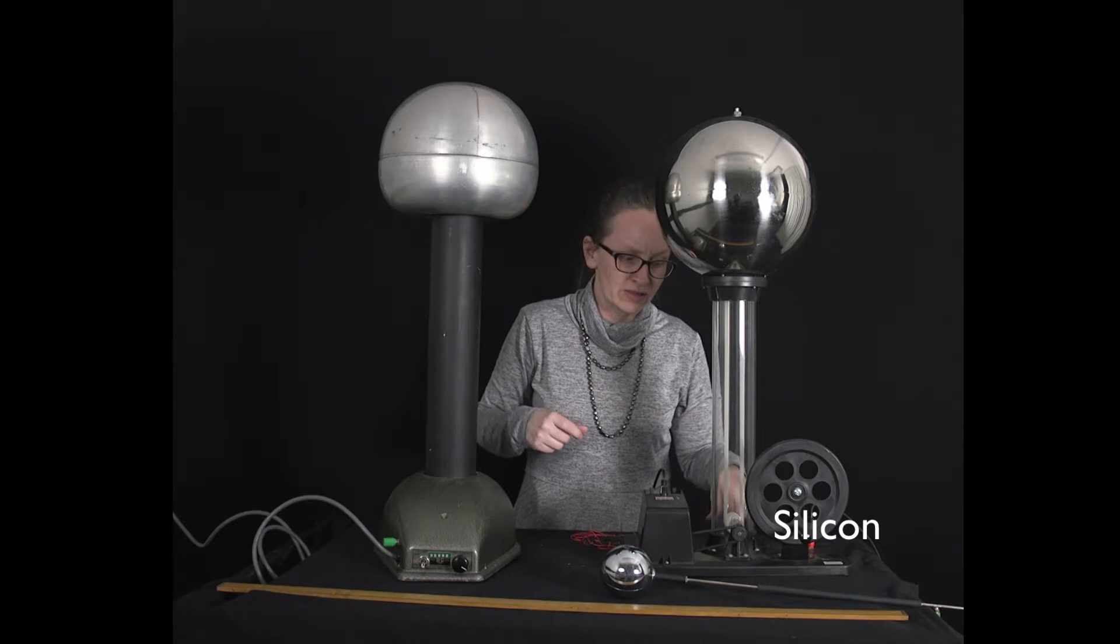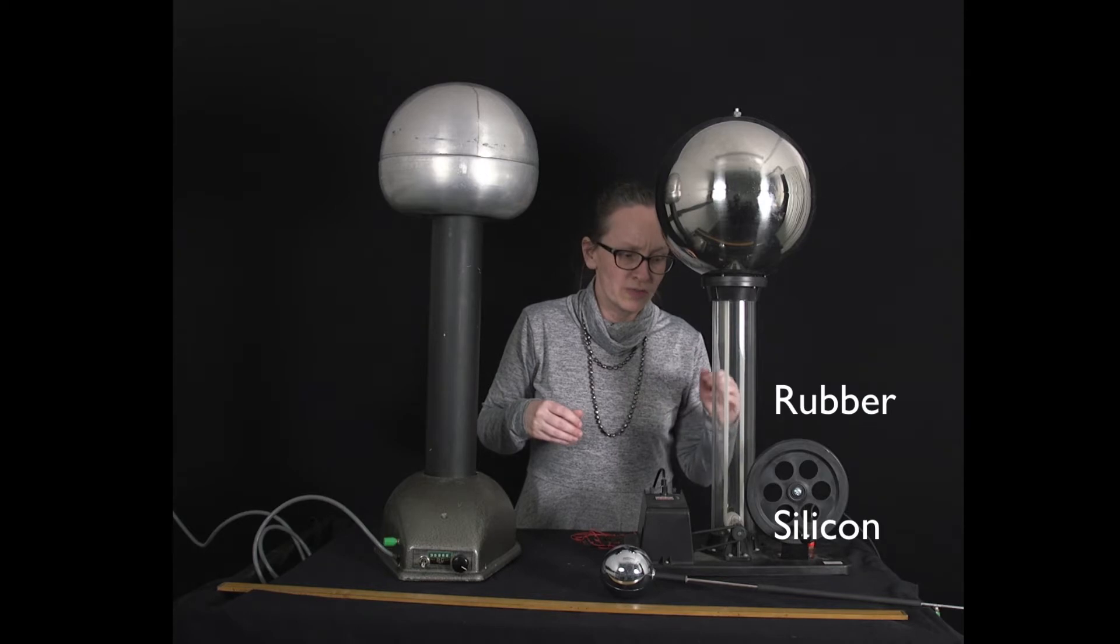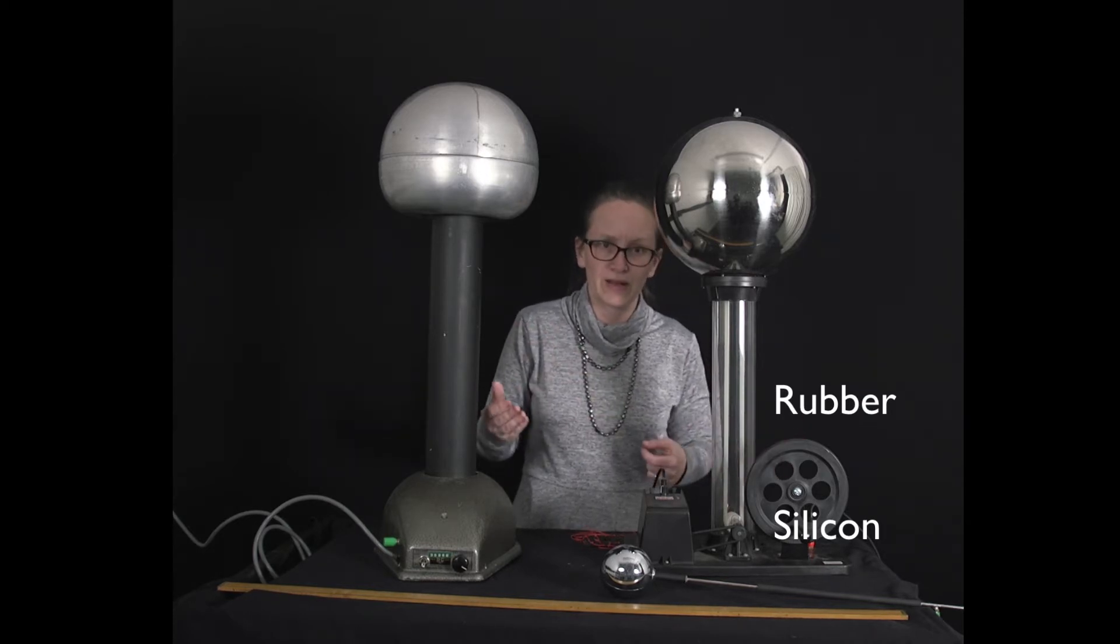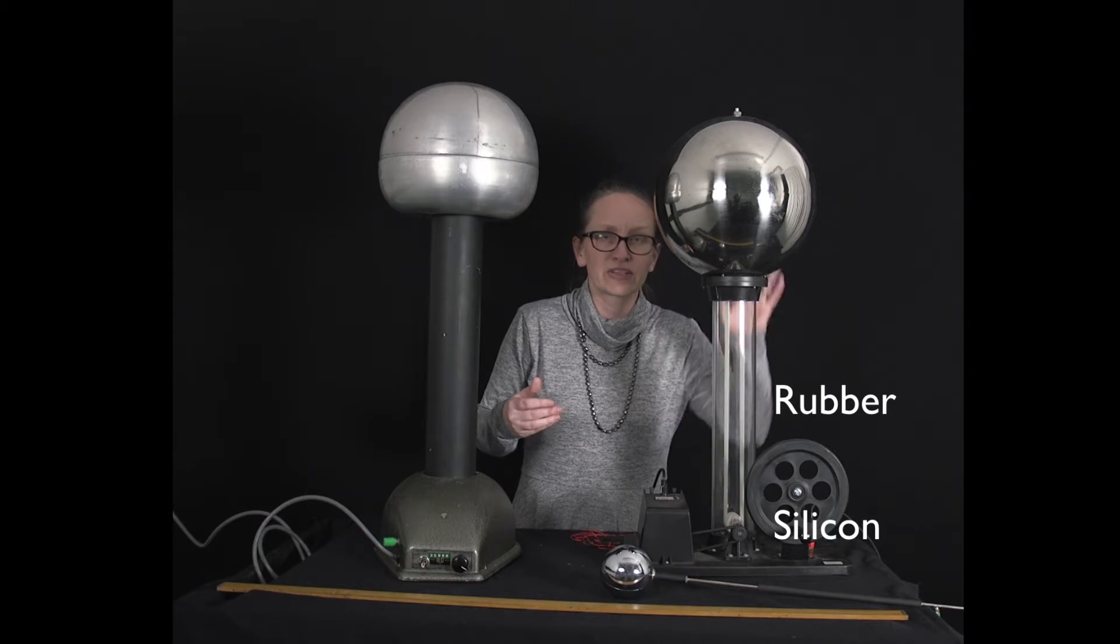Now the belt itself is made of rubber, so because silicon will become negative and the rubber will become positive, the rubber is giving electrons to the silicon and is positive.